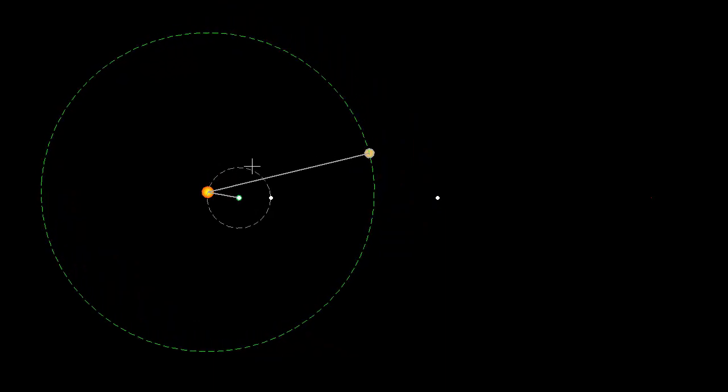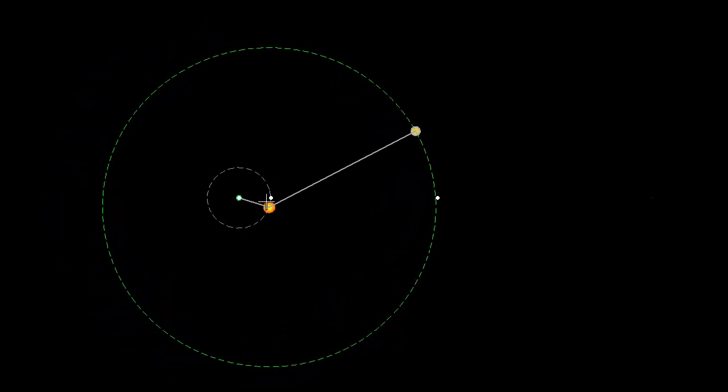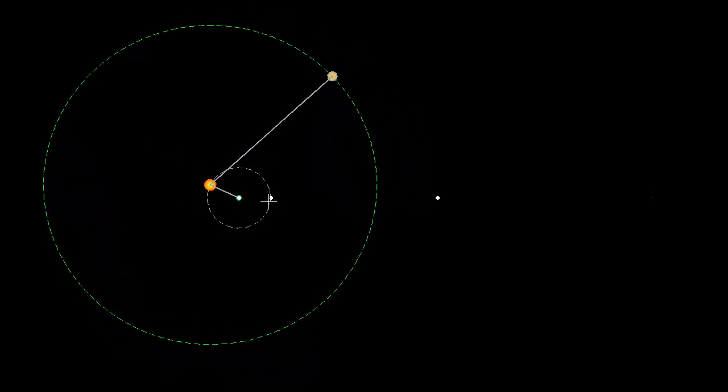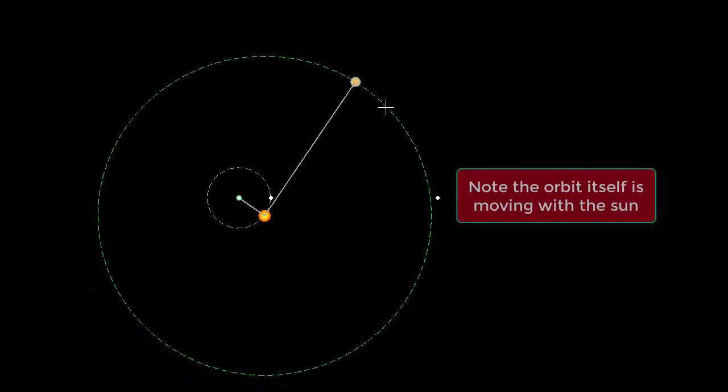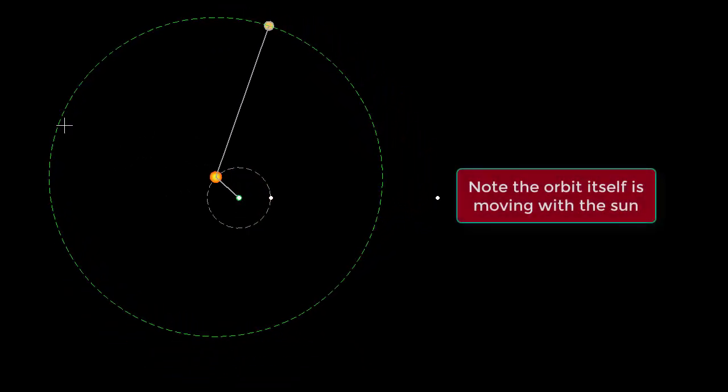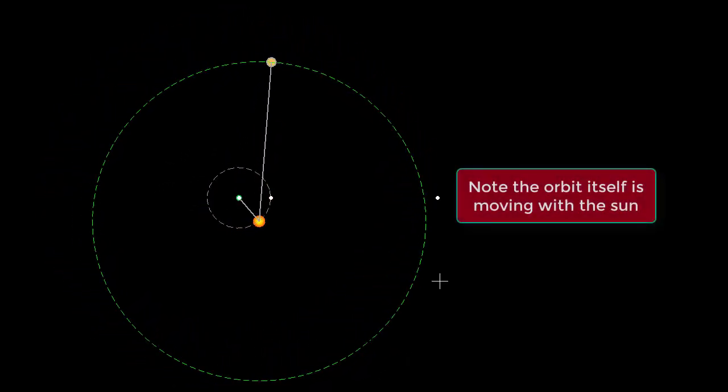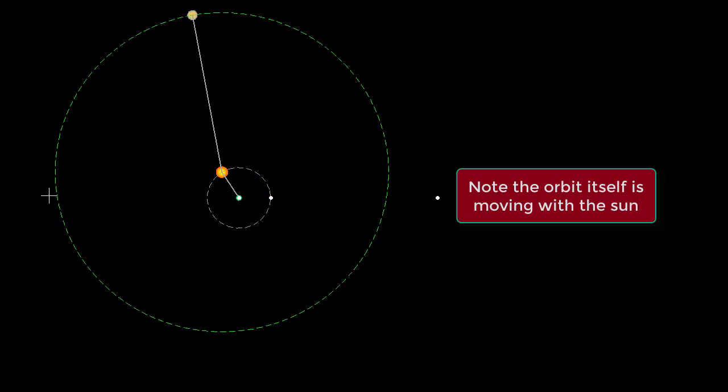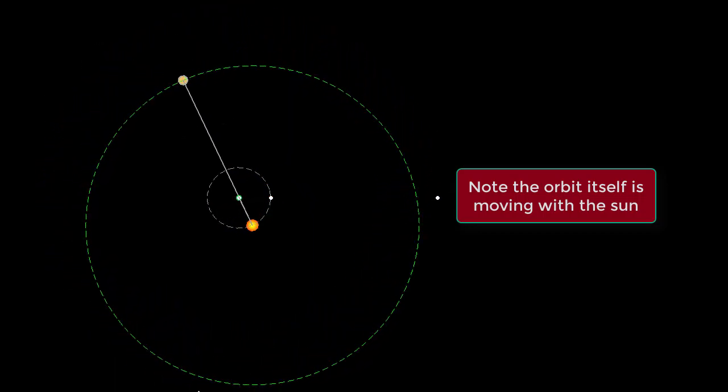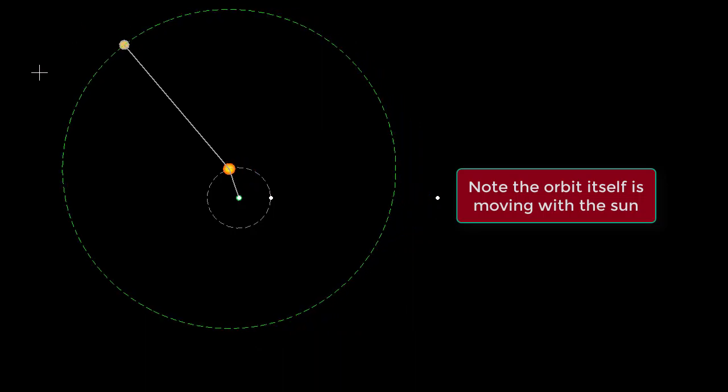So, here you can see the Sun is going around the Earth and it is going to take about one year. Then the orbit of Jupiter itself, the whole thing, is moving with the Sun. So, as the Sun is going in a circle, the orbit, the whole green circle here is going in a circle.